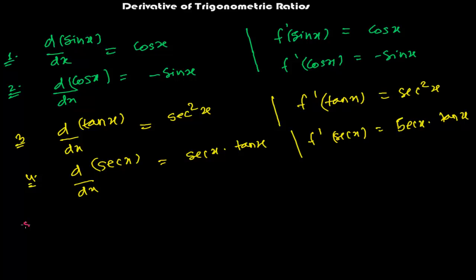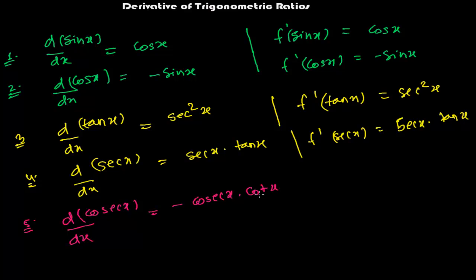The fifth one: the derivative of csc x with respect to x is −csc x · cot x. In function notation: f'(csc x) = −csc x · cot x.